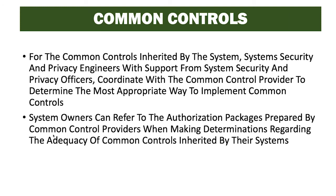For common controls inherited by the system, the system's security and privacy engineers, with support from security and privacy officers, coordinate with the common control provider to determine the most appropriate way to implement common controls. System owners can refer to the authorization packages prepared by the common control providers when making determinations about the adequacy of the common controls inherited by their systems. As a security or privacy officer, one important responsibility is reviewing common controls to ensure they provide the correct level of protection required for the system and the data being processed.